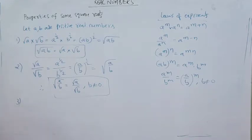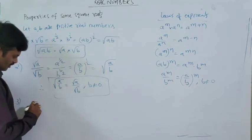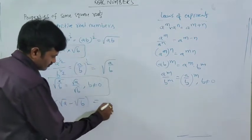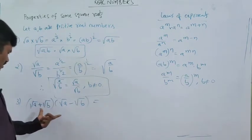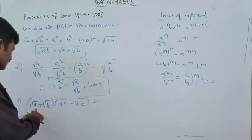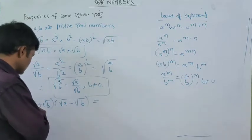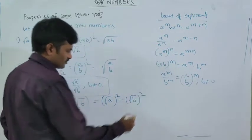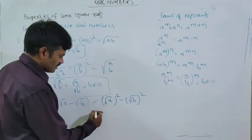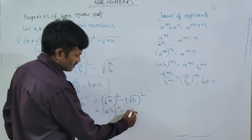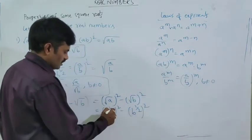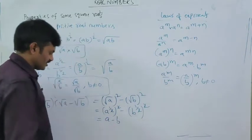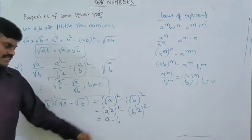The third property: finding the product of square root of A plus square root of B, into square root of A minus square root of B. If you observe this form, it is like the A plus B into A minus B formula. Using that formula, A plus B into A minus B equals A squared minus B squared. So here, square root of A whole squared minus square root of B whole squared. Since square root of A is A power 1 by 2, squaring gives A power 1, and similarly for B. So the result is A minus B. Therefore, root A plus root B into root A minus root B equals A minus B.